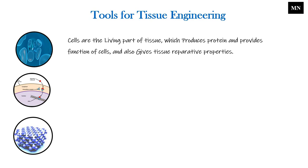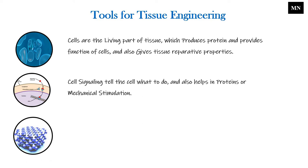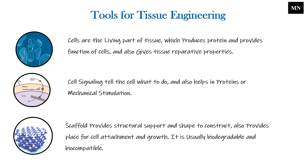Cells are the living part of tissue, which produce protein and provide the function of cells and also give tissue reparative properties. Cell signaling tells the cell what to do and also helps in proteins or mechanical stimulation. Scaffold provides structural support and shape to the construct, and also provides a place for cell attachment and growth. It is usually biodegradable and biocompatible.